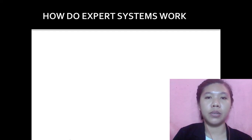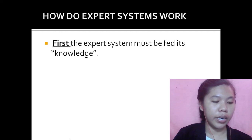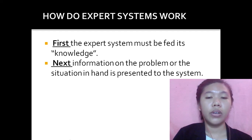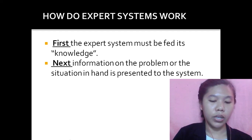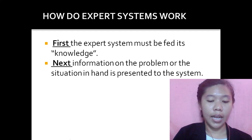How do Expert Systems work? First, the Expert System must be fed its knowledge, where human experts contribute their information on a particular subject matter, which is programmed into the system. Next, information on the problem or situation is presented to the system through the user interface, where a non-expert user can query the expert system by asking or answering questions.